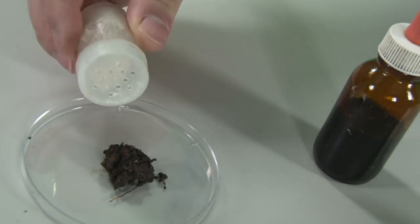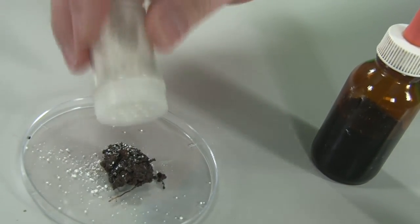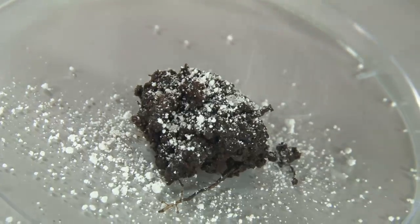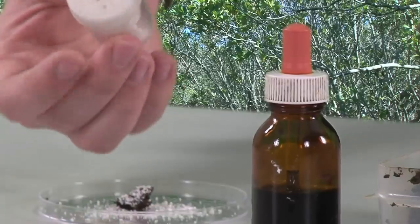We need barium sulphate and we sprinkle this nice and liberally so we have a really good area to actually watch the color change when we add our universal indicator. There we go, that's plenty.